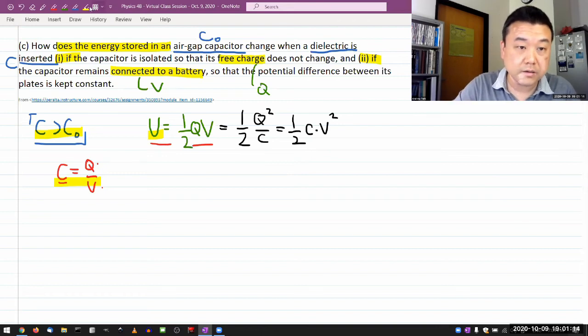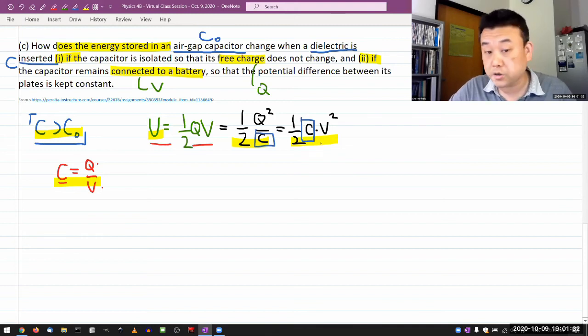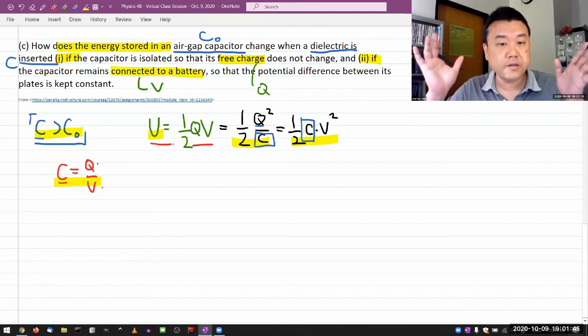So as you look at these two expressions for energy, you can see that how the stored energy changes with the change of the capacitance, it's going to be quite dependent on if it's your voltage that remains the same, or the charge that remains the same. If it's a charge that remains the same, then as you increase capacitance, your potential energy is going to go down. And you can kind of look at it as it's because the voltage is decreasing.